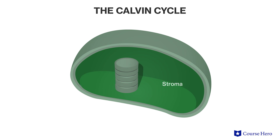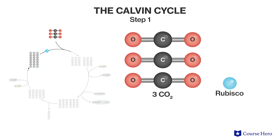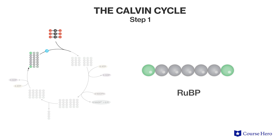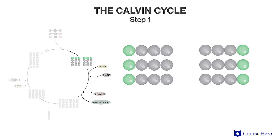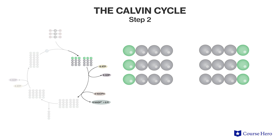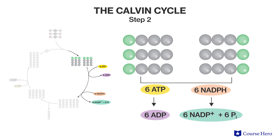The Calvin cycle takes place in the stroma, the fluid inside the chloroplast, and can be divided into three main steps. The first step is known as carbon fixation, because it takes in carbon dioxide from the atmosphere and fixes it into organic molecules. In this step, the enzyme known as rubisco adds one carbon to a five-carbon sugar called ribulose bisphosphate, or RUBP. This forms a six-carbon sugar that is unstable and immediately splits into two three-carbon molecules called 3-phosphoglycerate, or 3-PGA. In the second step, a series of reduction reactions utilizing ATP and NADPH from the light reactions results in glyceraldehyde 3-phosphate, or G3P, a precursor to glucose.